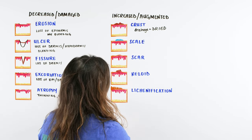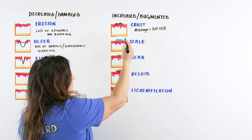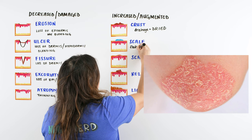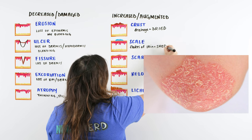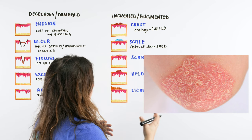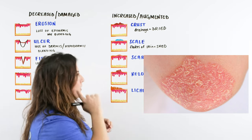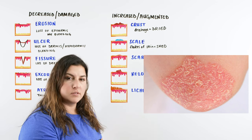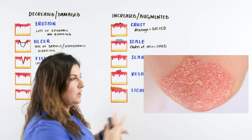Moving on to scale. When we talk about scale, we're talking about just basically flecks of skin. We have skin that is trying to shed, but instead it's having an issue shedding and it's starting to build up. We're going to get this scaly-looking appearance. We can think of things like dandruff or psoriasis, where we have this buildup or scaly appearance of the skin. Scaling is just the flakes of skin that are trying to shed off and aren't doing a great job of that.